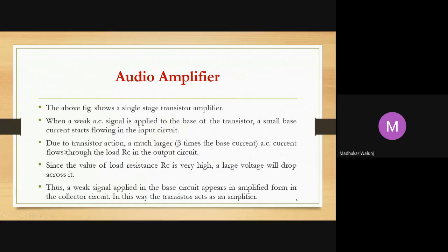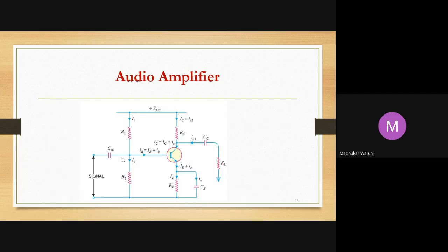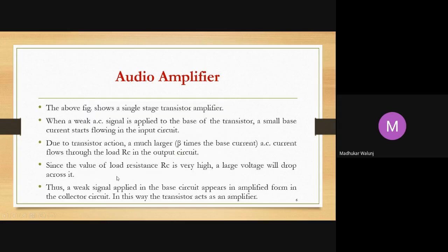Due to the transistor's action, beta times the base current flows. Beta is almost from 20 to 400, so that many times the base current — the AC current — flows through the load resistance RC in the output circuit. The current flowing is alternating current because the audio signal is alternating. The load resistance value is very large, so a large voltage drop will be across it, leading to a larger value of the audio output. Thus, a weak signal applied at the base circuit appears in amplified form — beta times the base current — in the collector circuit. In this way, the transistor acts as an amplifier.